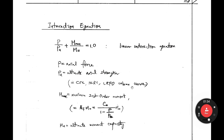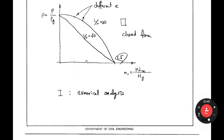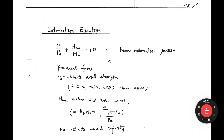From this curve we can consider interaction equations, where P is axial force, PU is axial strength, MU is moment capacity, and M maximum is the maximum second-order moment. The previous curve we drew regarded first-order moment. This interaction equation considers second-order moment for the strength of axial force and bending moment — it is a linear interaction equation.